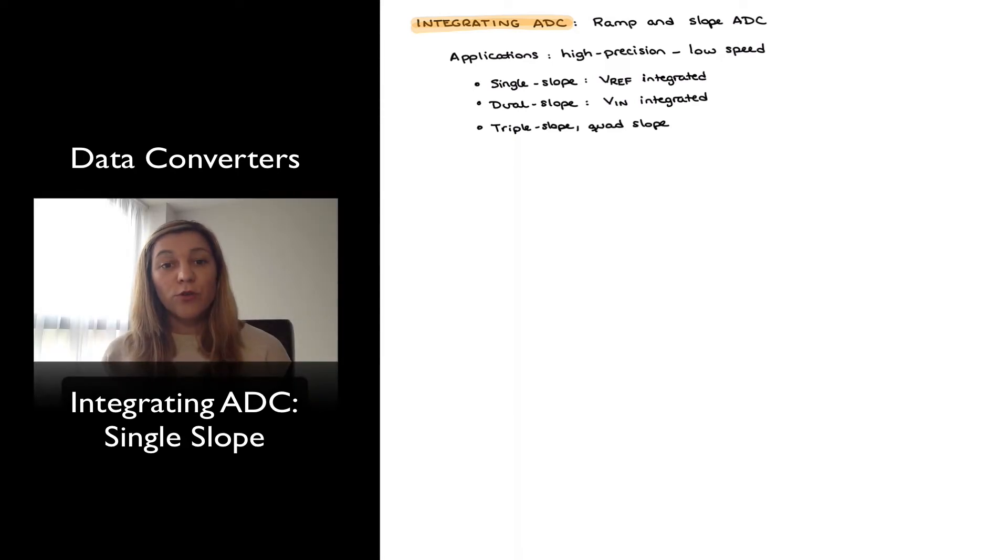Hello. In this video we are going to talk about another type of ADCs, which are known as integrating ADCs. Sometimes they're also referred to as ramp and slope ADCs. The key characteristic of these circuits with respect to other ADCs is that they tend to have higher precision at the expense of speed. In terms of applications, these circuits will be generally used for applications that value precision over speed.